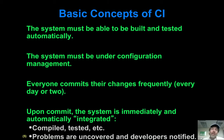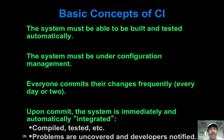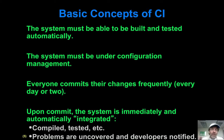Continuous integration arose out of that notion — that it would be really great if we could take care of those inconsistencies that will inevitably arise when people are working concurrently as fast as possible. There were some preconditions that had to be satisfied in order for this to work. First, we have to be able to build and test the system automatically, because we want this to be all done automatically. The system must be under configuration management control, and crucially, people need to be committing changes frequently. The whole thing falls apart if you work on some part of your system but don't commit it to the repository except every month or so. You've got to be able to divide your work into small pieces such that you can finish a logical chunk, the system all works, and you can commit that change to the repository.